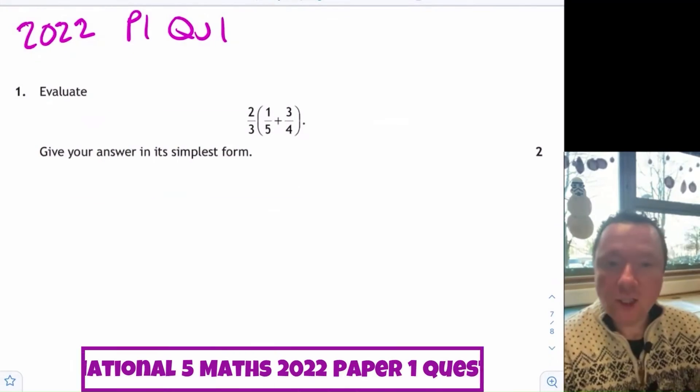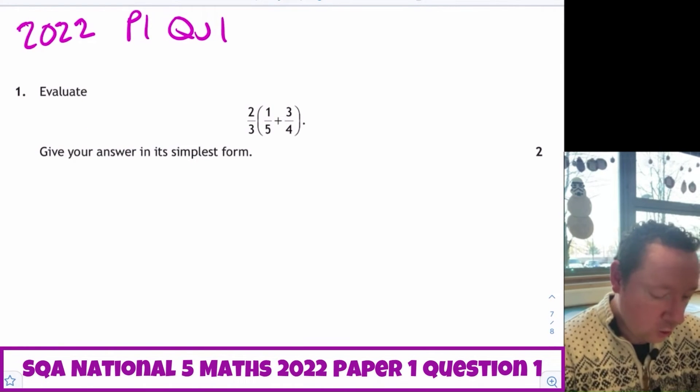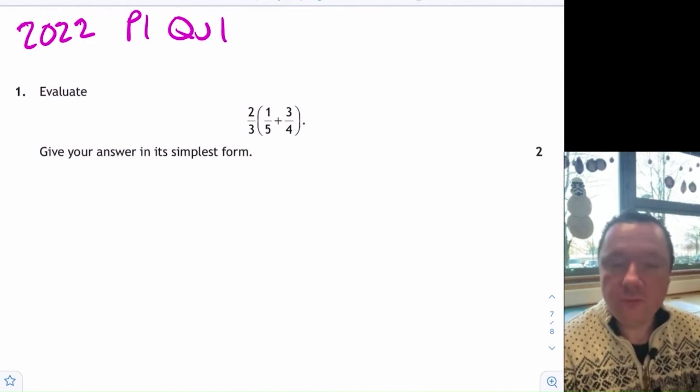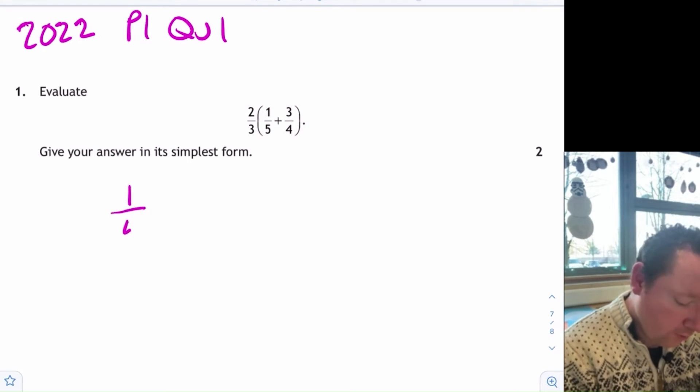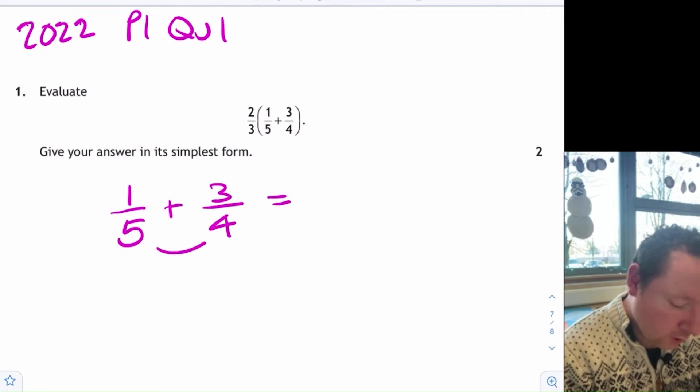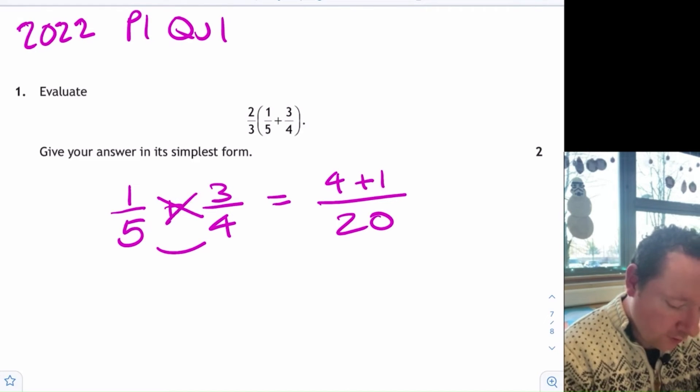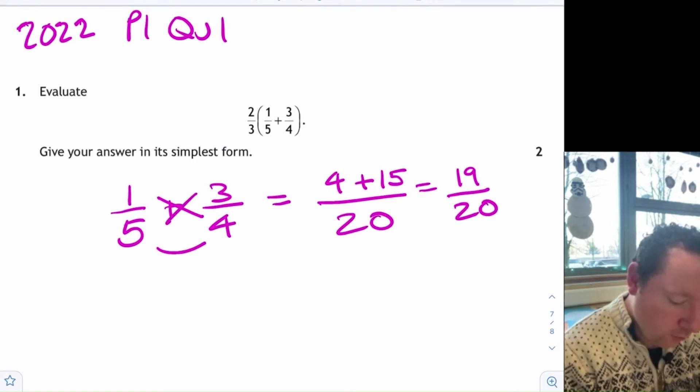2022, just last year, paper 1, question 1. Evaluate 2 fifths times 1 fifth plus 3 quarters. So again, BIDMAS, brackets first. 1 fifth plus 3 quarters. Common denominator is 20. 1 times 4 is 4, plus 3 times 5 is 15. 19 out of 20. So we've still got this 2 fifths to times by.